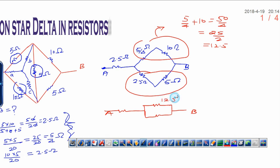That means this value is 12.5. Similarly here, it will be 2.5 plus 5, that is equivalent to 7.5 ohms. Now this will be 7.5 ohms and this is 2.5 ohms.